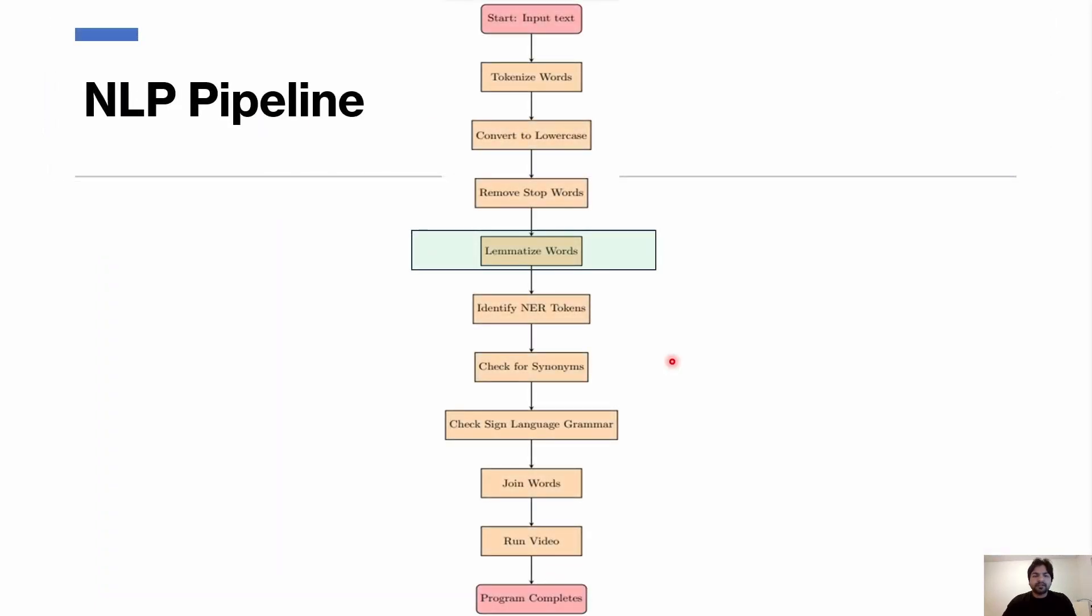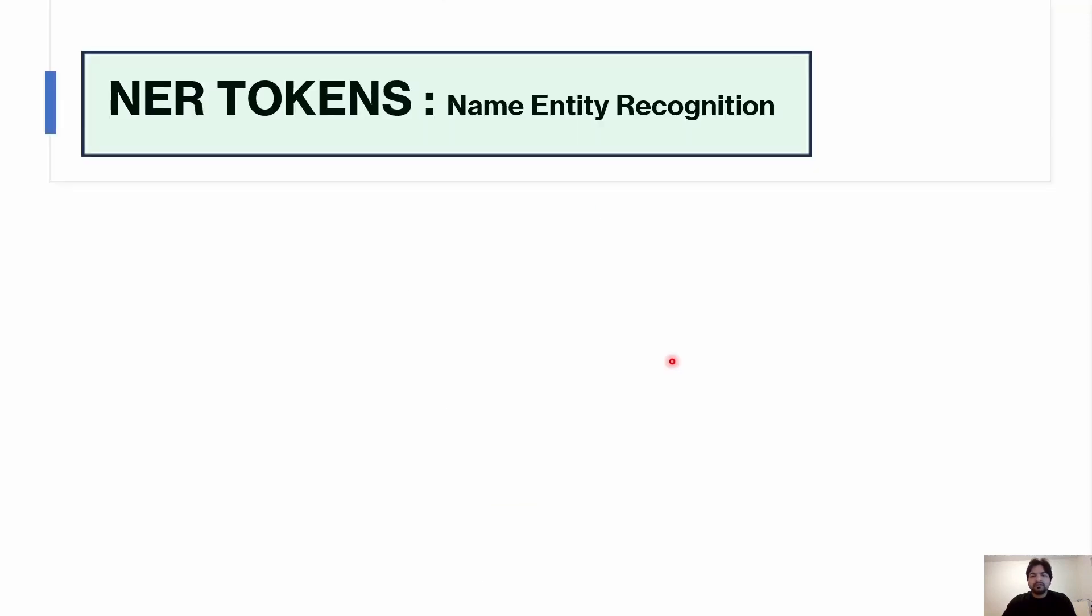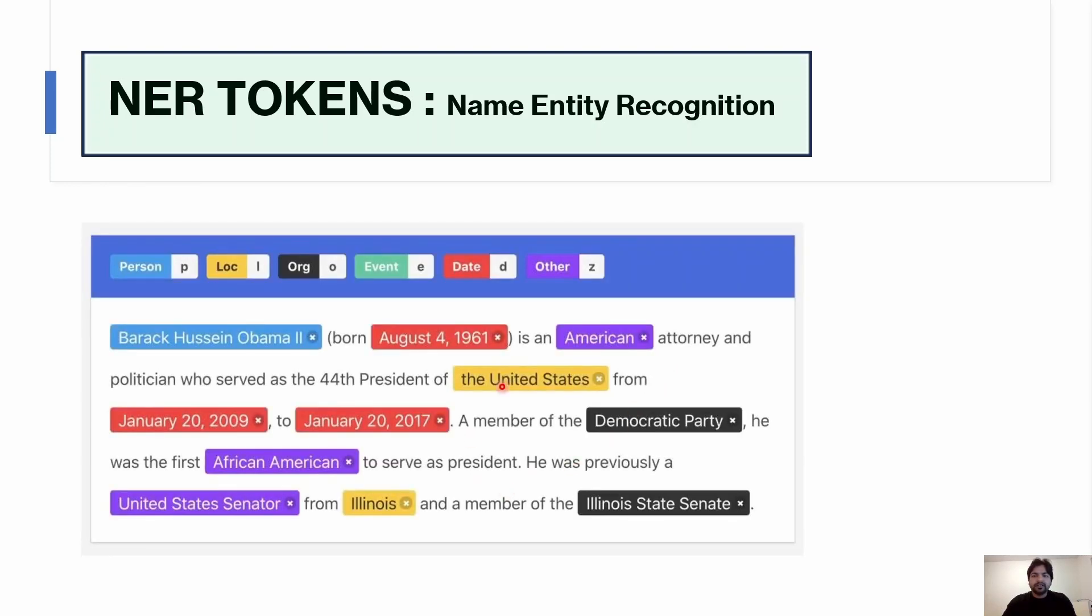After the words were lemmatized, then Named Entity Recognition was done. NER is a technique used to identify and categorize named entities within a text, such as the names of people, organizations, locations, and even dates. It enhances the efficiency and accuracy of text processing tasks. It helped in keeping the information and displaying it correctly in the sign language videos.